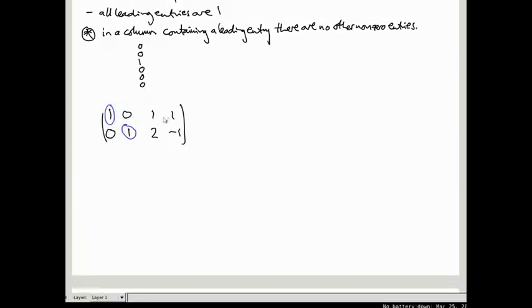So this is 1, 0, 1, 1, 0, 1, 2, minus 1. And let's stick an augmentation, an extra column, so that it becomes associated with a system of simultaneous equations. Let's say 5, 13 or something. Doesn't really matter.